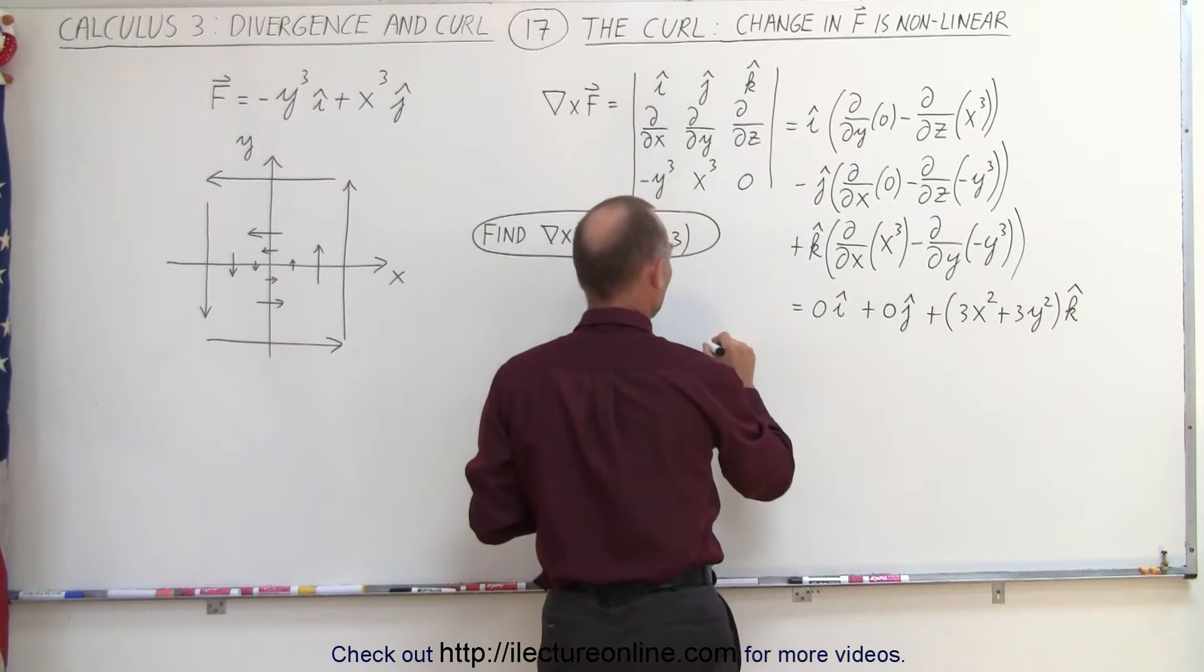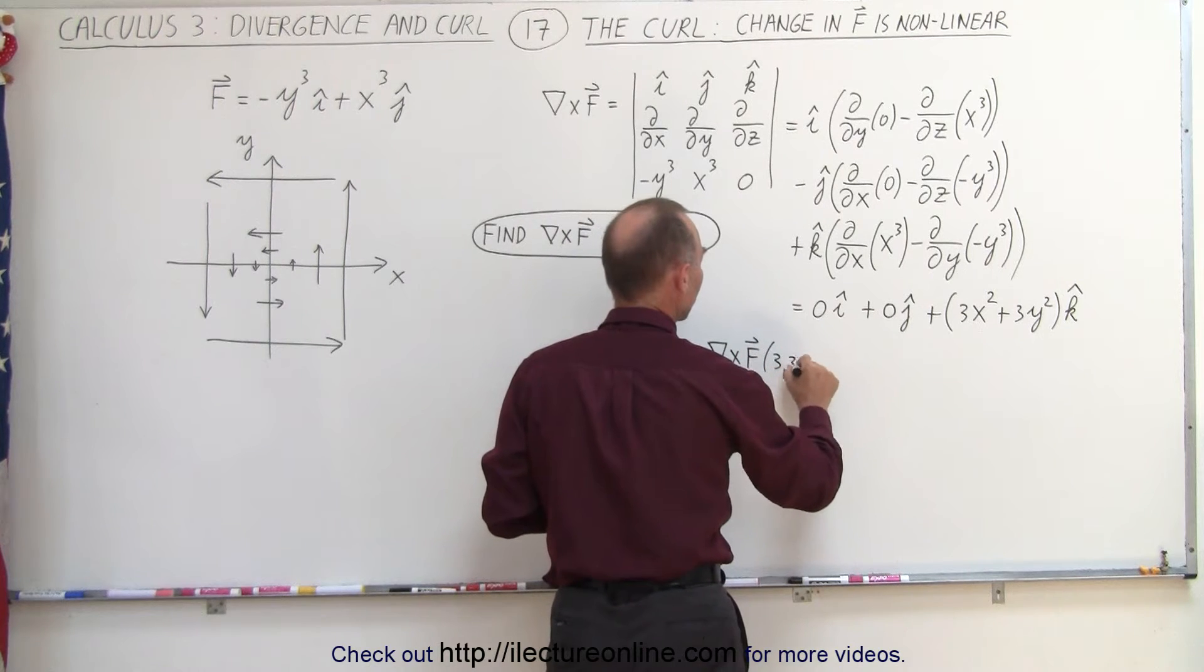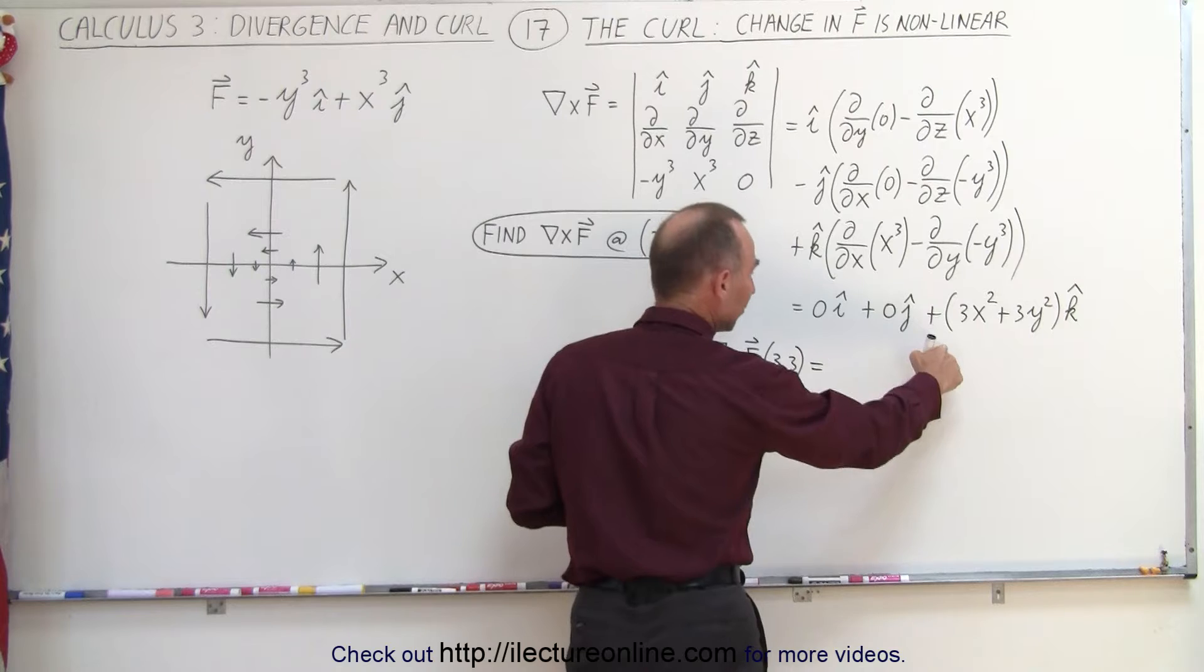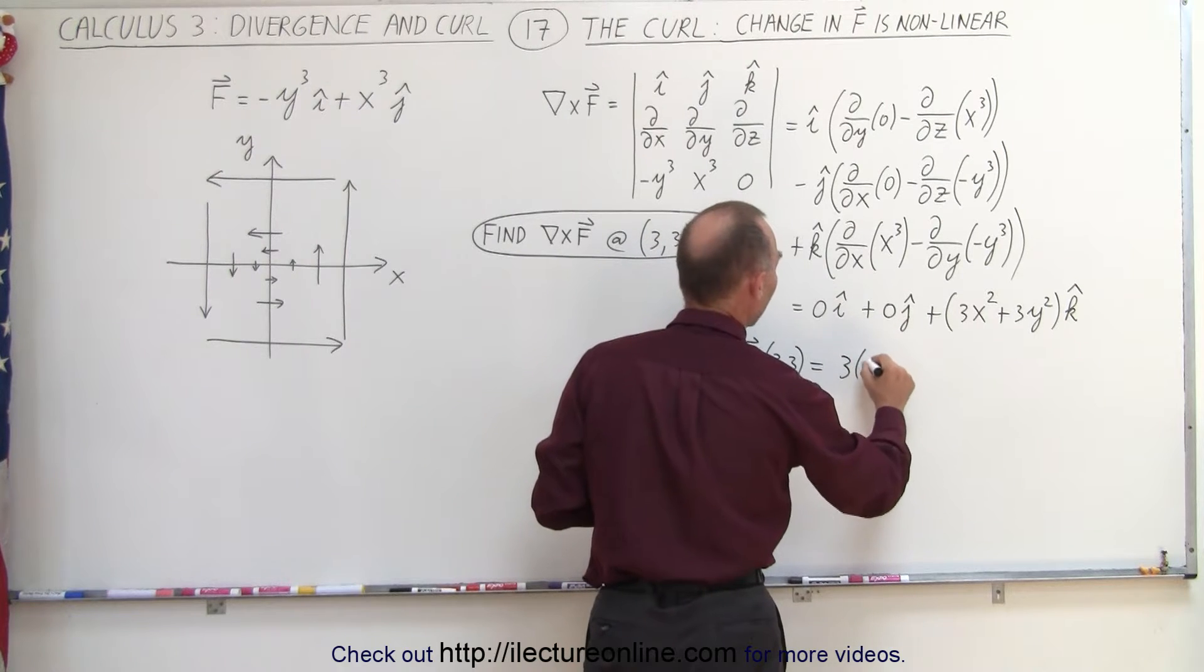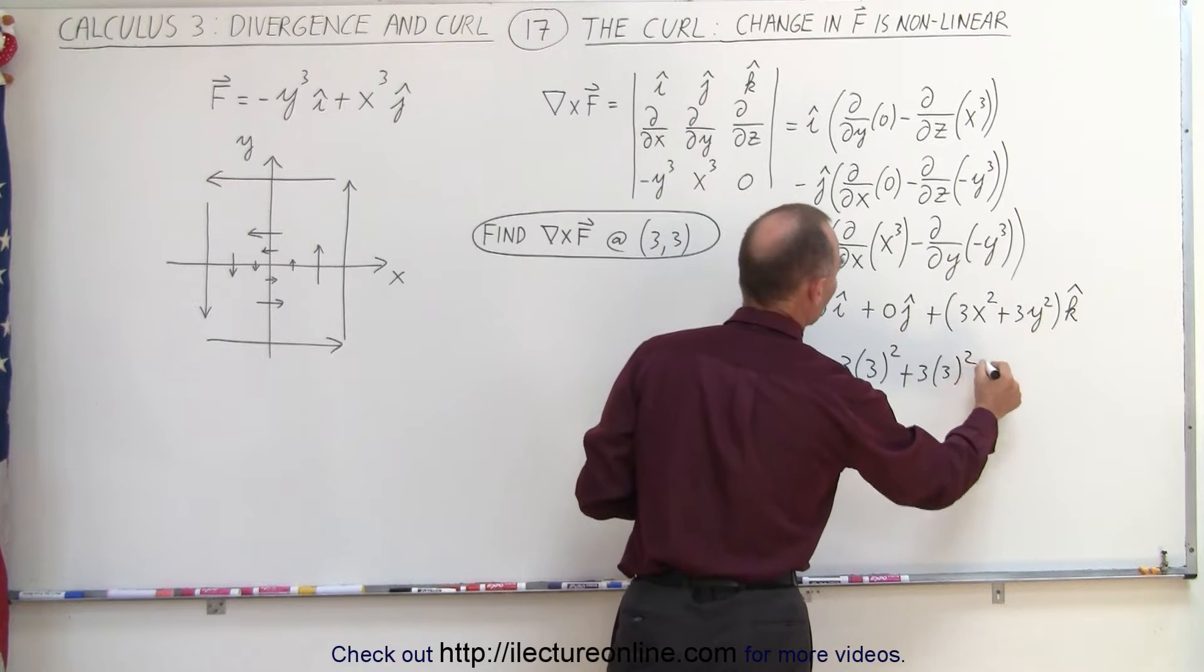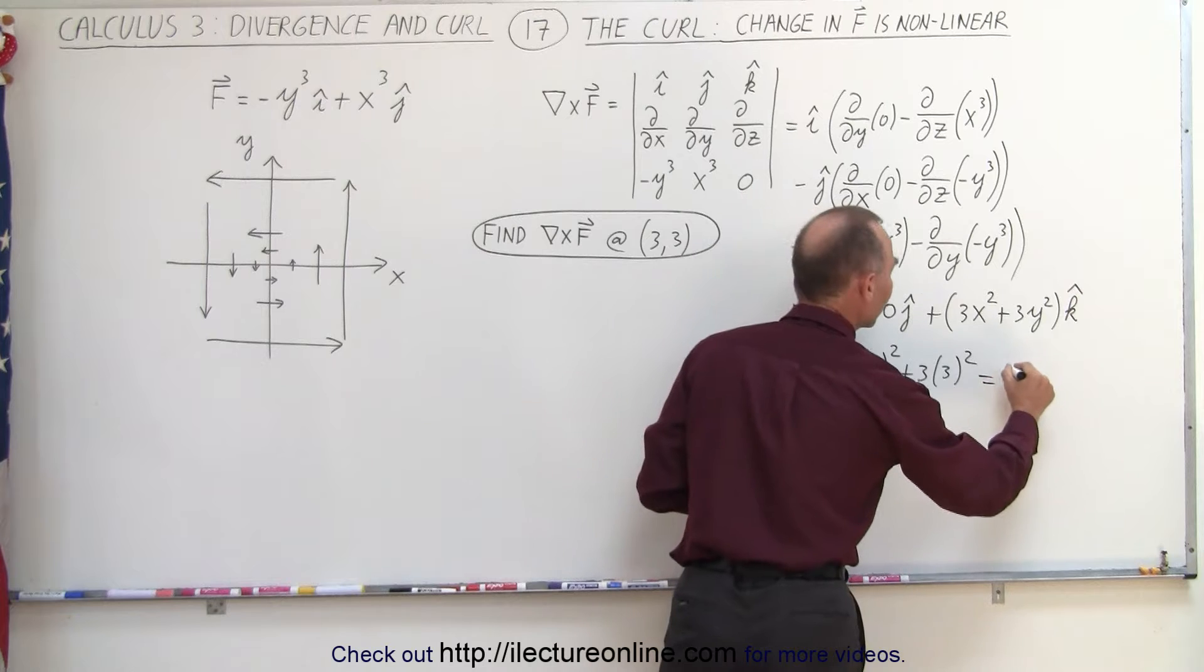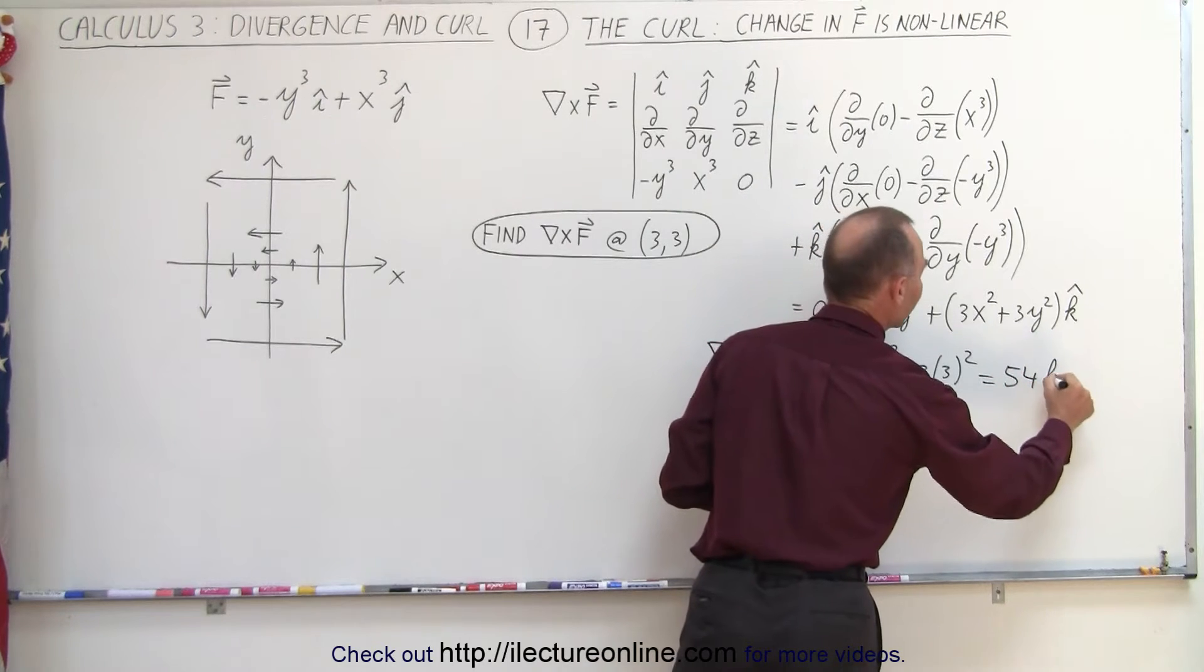So the curl of the vector field at x equals 3 and y equals 3, in this particular case is going to be 3 times 3 squared plus 3 times 3 squared. Now 3 squared is 9 times 3 is 27. Do that twice. That gives us 54k.